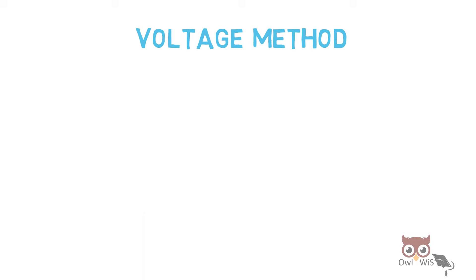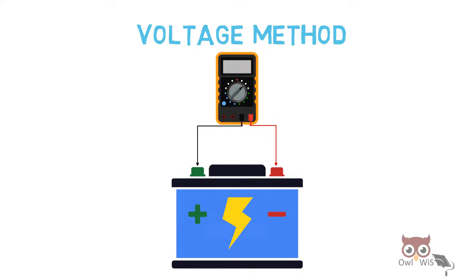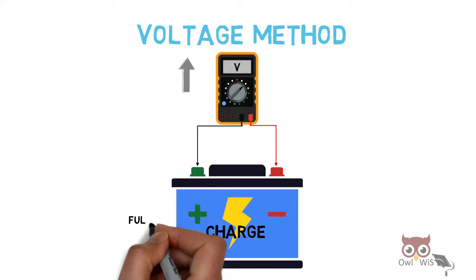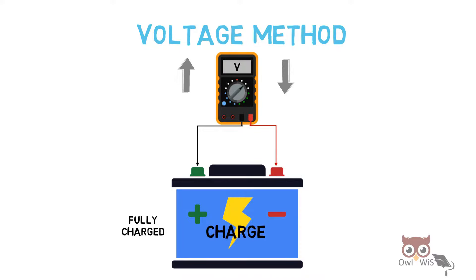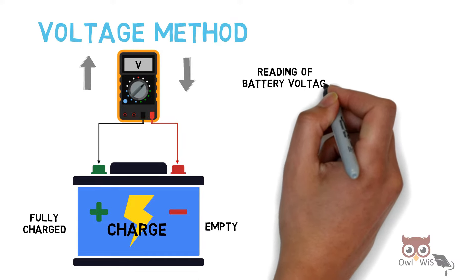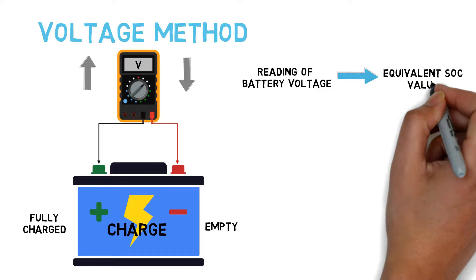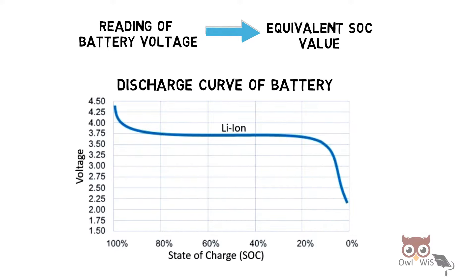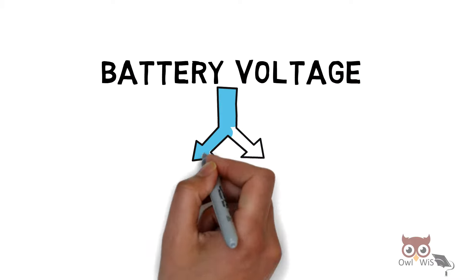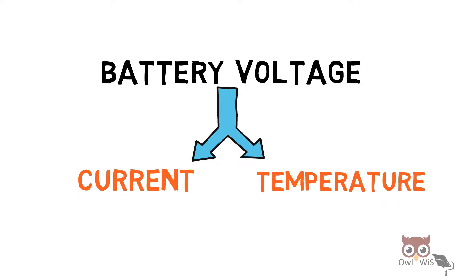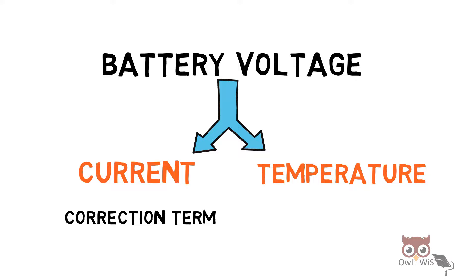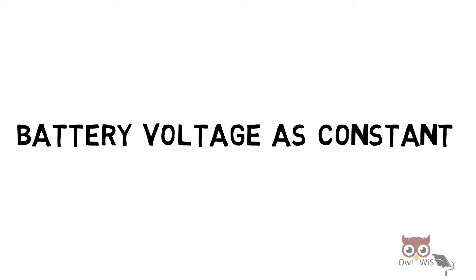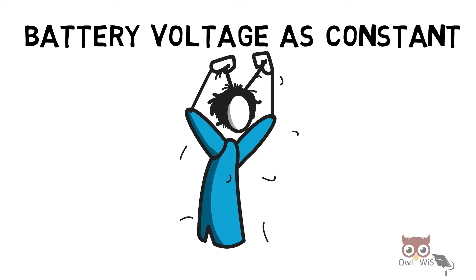The first method is the voltage method. Here, the voltage across the terminals of the battery is measured. This voltage is related to the charge available on the battery, such that the voltage is at its highest when the battery is fully charged and lowest when the battery is empty. This reading of battery voltage is converted to an equivalent state of charge value based on the discharge curve of the battery, which is a graph of voltage versus state of charge for a lithium-ion battery. Battery voltage also depends on other factors such as current and battery temperature, so a correction term is added for current. Similarly, a lookup table of open circuit voltage versus temperature correction is added. Along with that, battery voltage needs to be constant for this method, which is difficult to achieve — hence this method is difficult to apply.